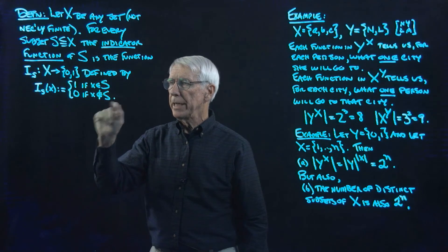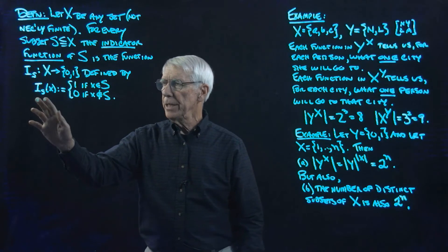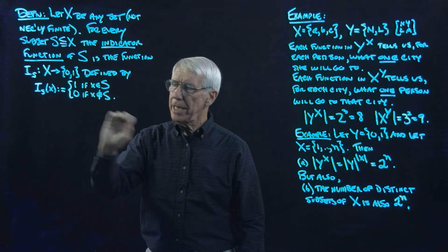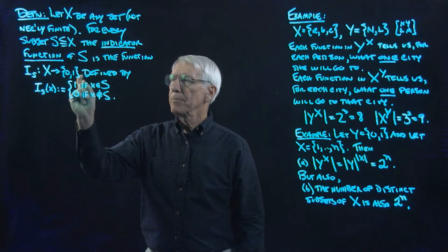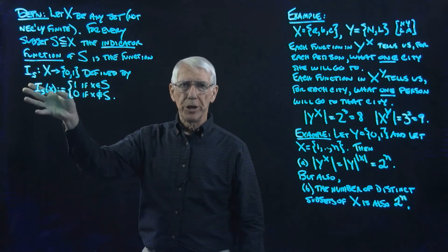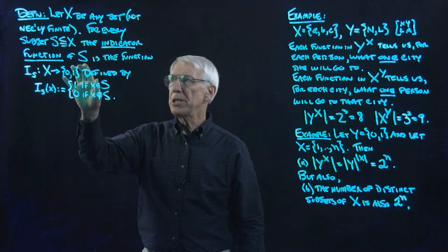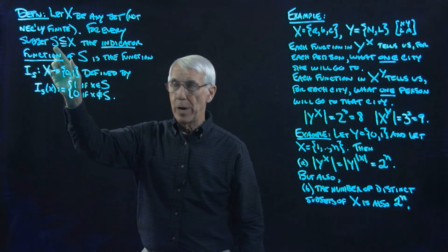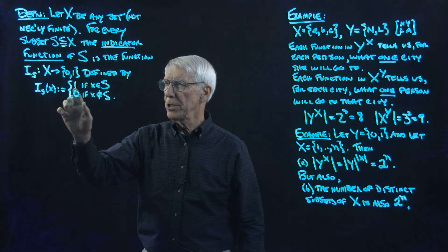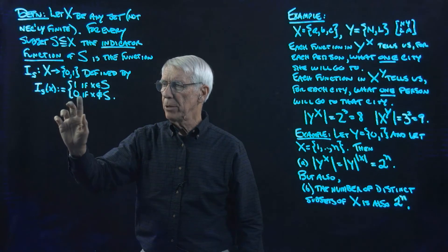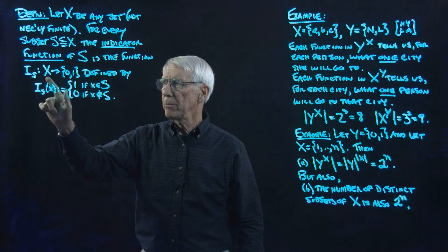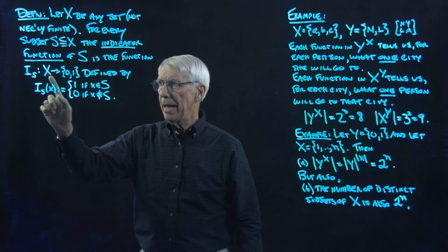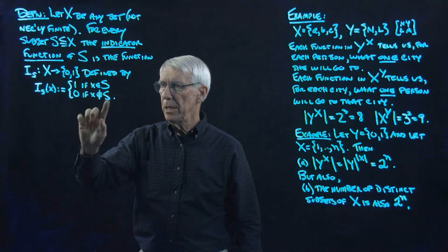You can see why we'd call it an indicator function — its value at every x indicates whether x is in the subset or not. For example, if x were the set of real numbers and s were the subset of rational numbers, then the indicator function for that subset would assign all the rational numbers to 1 and all the irrational numbers to 0. Every element of x gets assigned 1 if it's in subset s, and 0 if it's not in s.